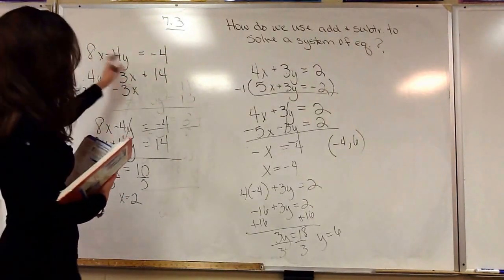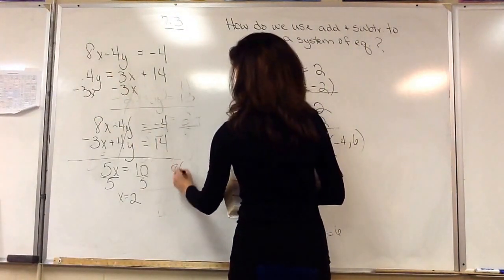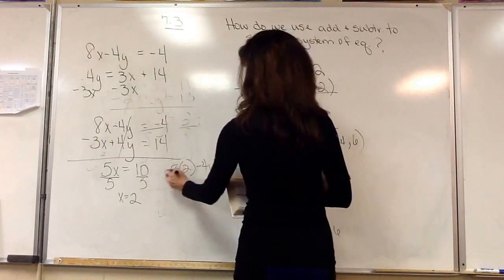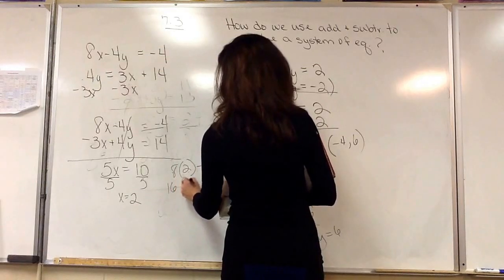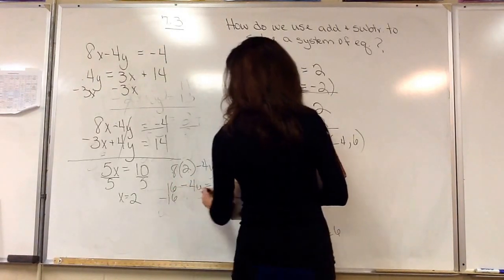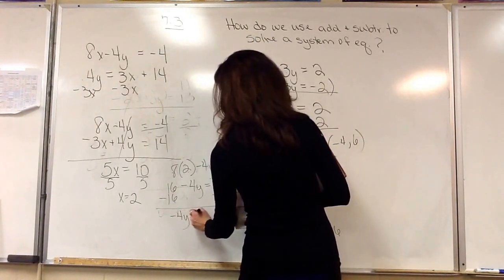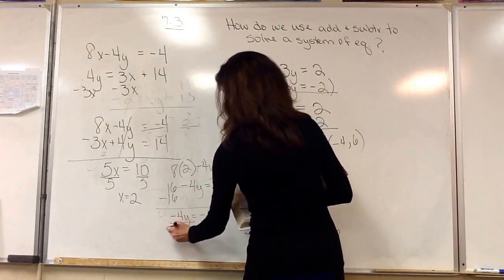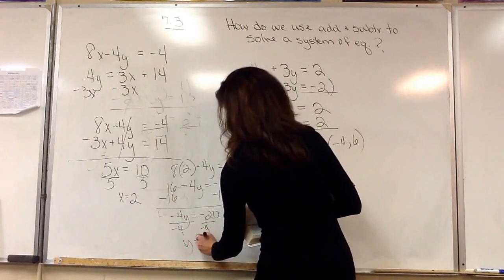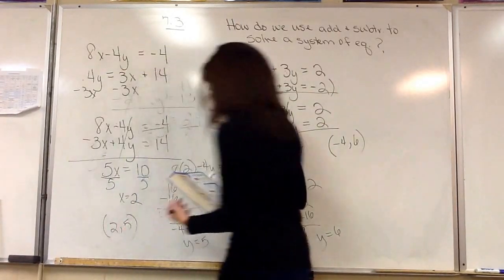And then we're just going to substitute that in to either equation. So I'll take the top one. 8 times 2 minus 4y equals negative 4. 8 times 2 is 16 minus 4y equals negative 4. We're going to subtract that 16 from both sides. Negative 4y equals negative 20. We're going to divide everything by negative 4, and y equals 5. So our answer is 2 and 5.